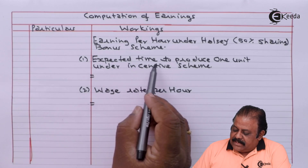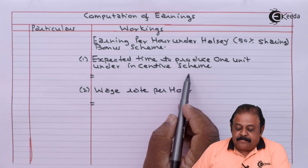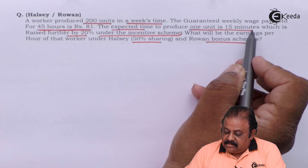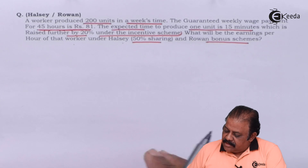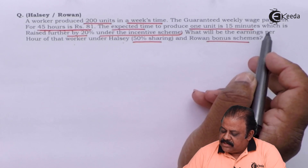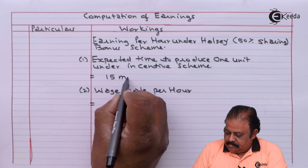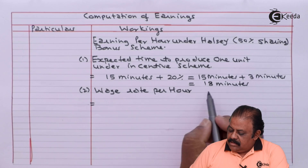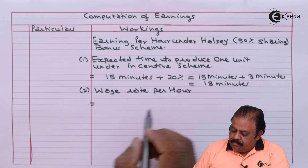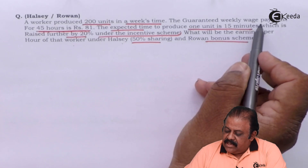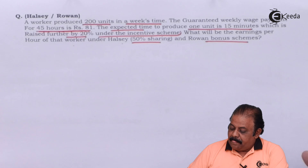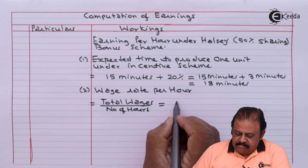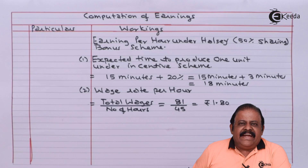We are required to first calculate the expected time to produce one unit under incentive schemes. The expected time to produce one unit is 15 minutes, as given in the question. This expected time is raised further by 20%, so 15 plus 3 comes to 18 minutes to produce one unit. The guaranteed weekly wage payment for 45 hours is rupees 81, so the wage rate is 81 divided by 45, which is 1 rupee 80 paise per hour.